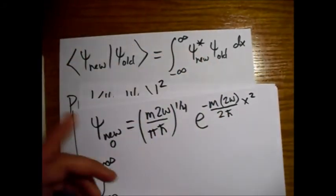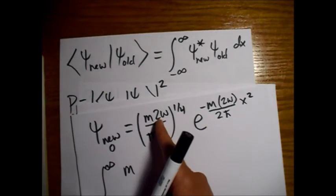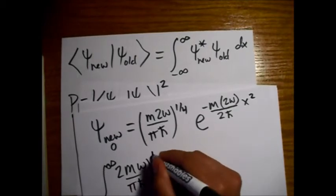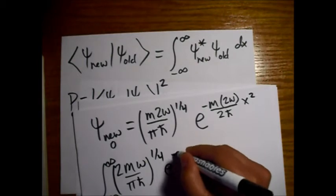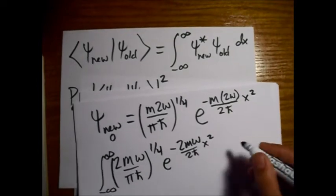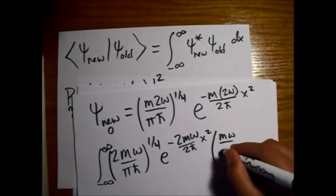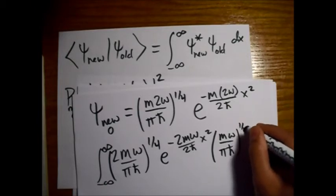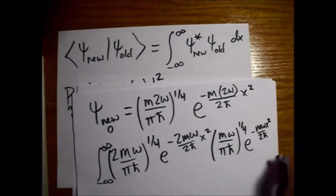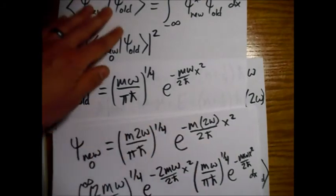Alright. So now, all we have to do, we'll just take this integral here, and then we'll take the square of it, and then we'll have our probability. So the conjugate of, alright, so we want to go, new is the conjugate one, which is this. It doesn't matter, this is all real, right? But I'm going to go ahead and bring the 2 in front now.